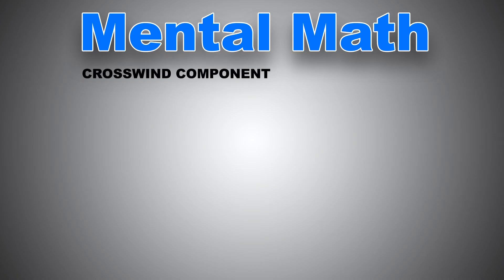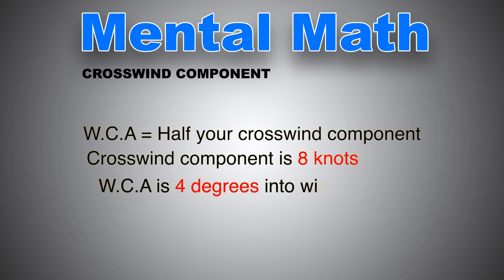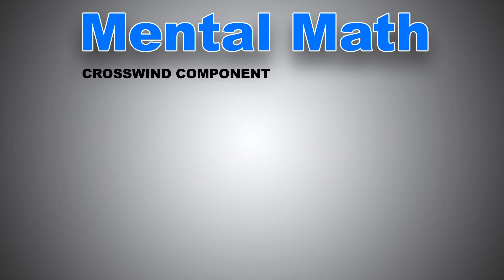Now, as for what is the wind correction angle, this leads us to the next mental math trick. The wind correction angle is always half the crosswind component. Meaning, if your calculated crosswind component is 8 knots, in order to maintain a track of 030, you need to correct for half of that, which is 4 knots. And of course, into wind. Your heading would need to be 034 to maintain a track of 030.